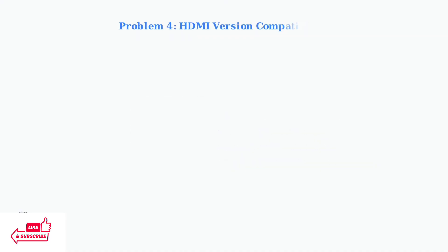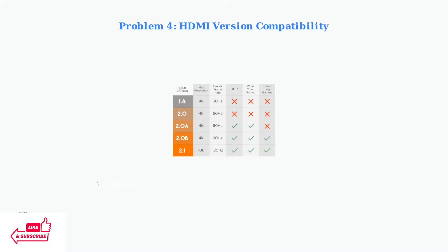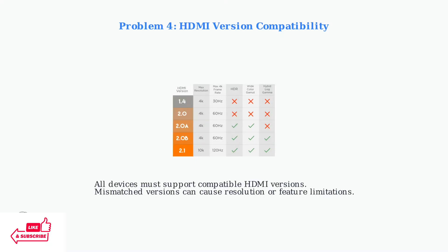HDMI version compatibility is crucial. This table shows different HDMI versions and their capabilities. All devices in your setup must support compatible versions, or you may experience resolution limitations or missing features like HDR support.